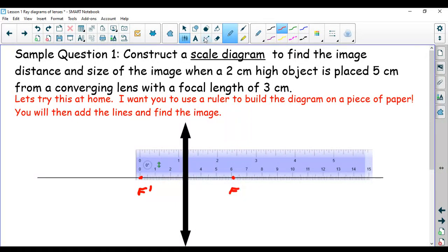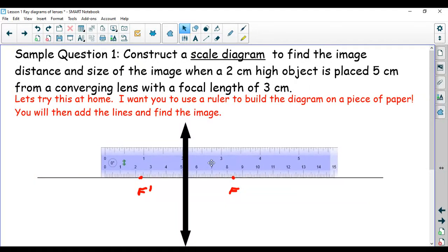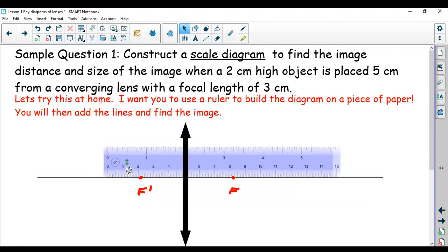Now I can read the next part. The next part says I need to put a two centimeter high object five centimeters from the lens. So it doesn't really matter which side I put it on. But I tend to put them on this side. So I'm going to put it on this side. I'm just going to start by making a little mark here so that I can locate that five centimeters. So I've moved it so it's five centimeters out. That's where I'm going to put my object.